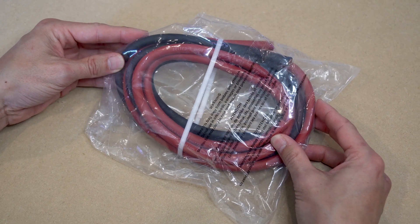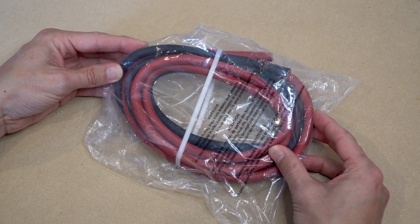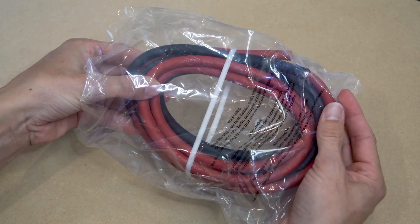This is what the package looks like when you first receive the product. So you want to take out the plastic packaging and cut off the zip tie.